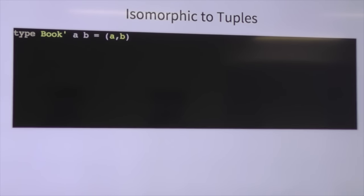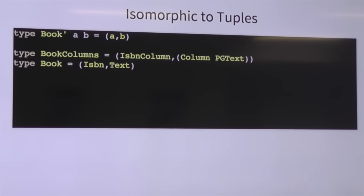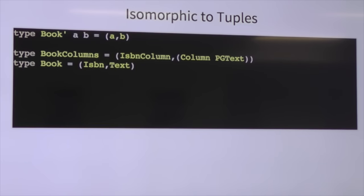Ignoring the profunctor stuff for now, we're saying our book is comprised of two columns as defined in our data type, the ISBN is required on insertion with column name `isbn`, the title is required and is called `title` in the database, and our table name is `book`. So looking at the records — they're a bit weird. Why do we give a type parameter for each field? The answer is: it's exactly the same as a tuple, except it's a tuple with names.